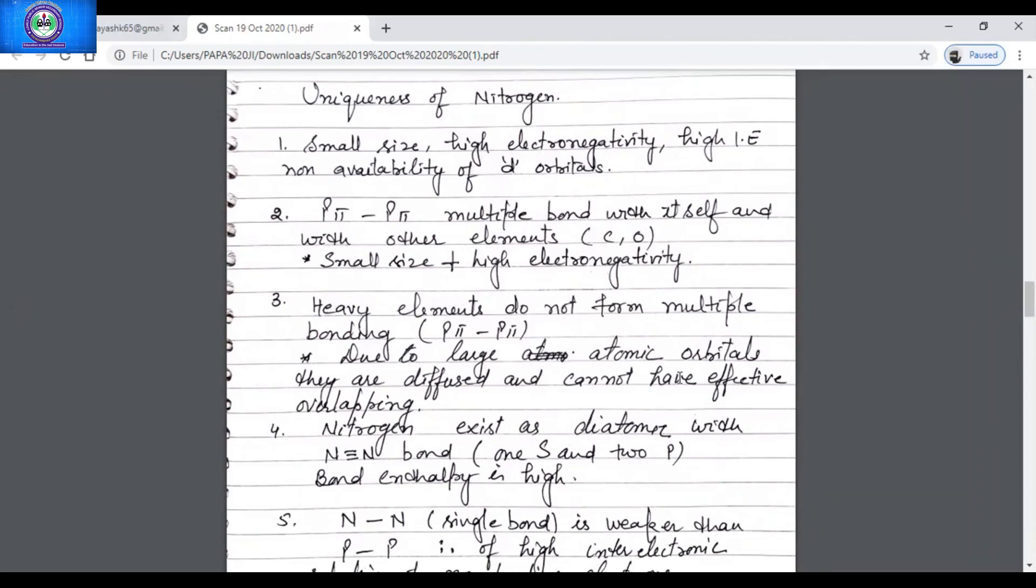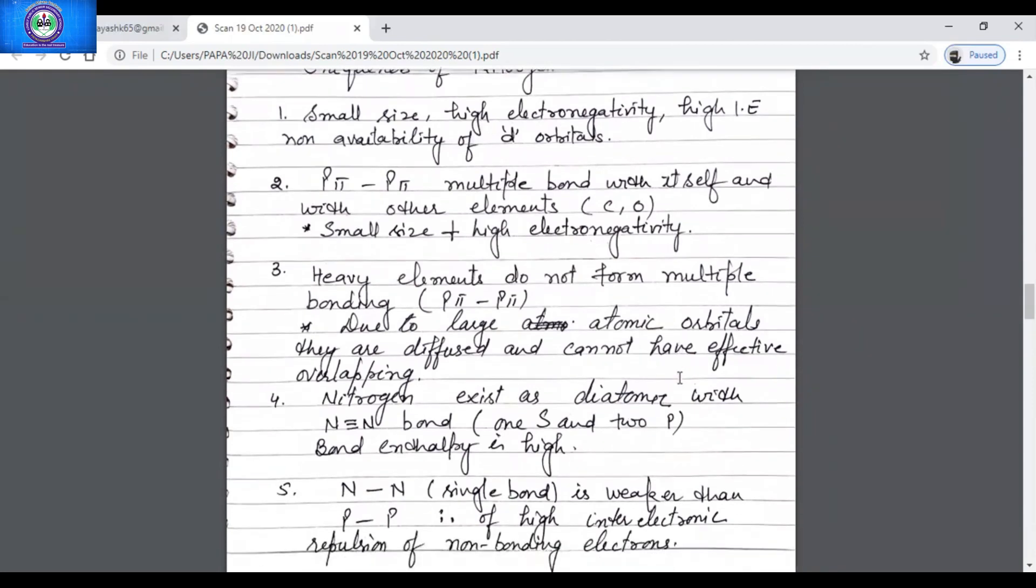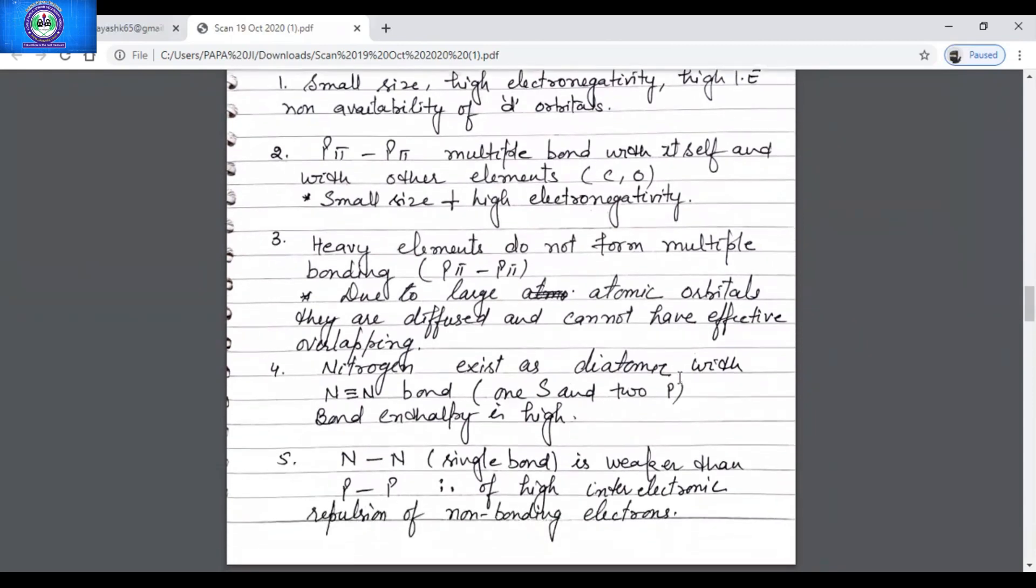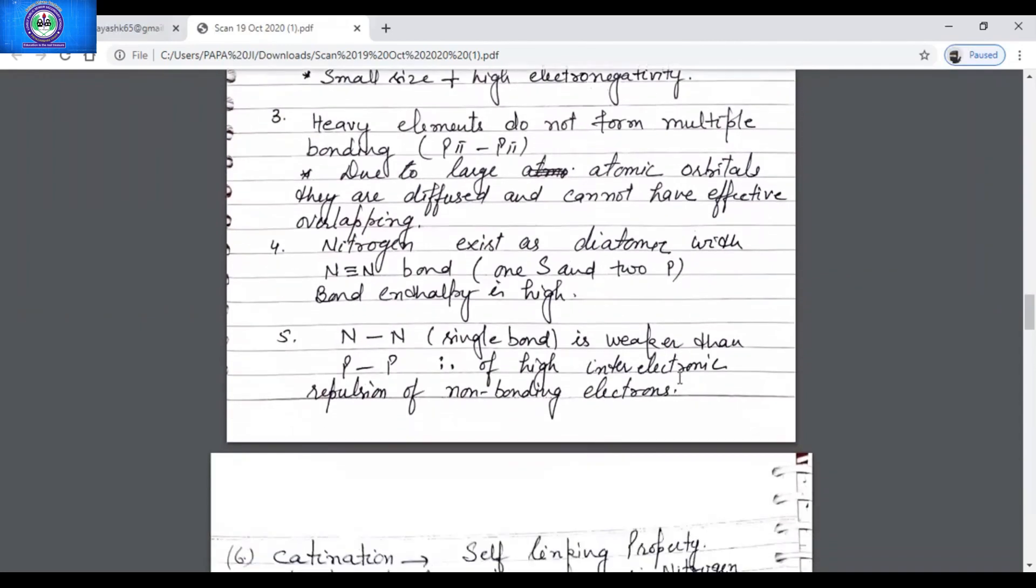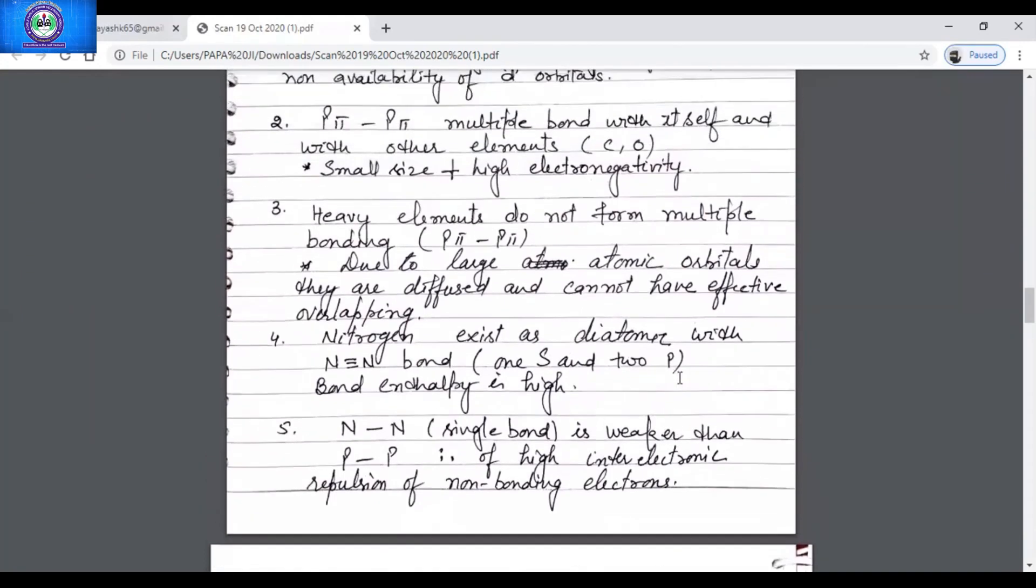They are diffused and cannot have effective overlapping. Nitrogen exists as diatomic molecule with triple bond and it has high bond dissociation enthalpy. N-N single bond is weaker than P-P. The single bond, it's because of the high inter-electronic repulsion of non-bonding electrons. Thank you.